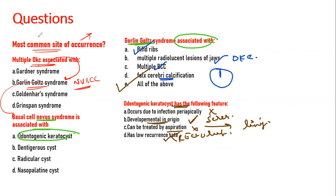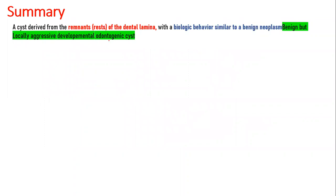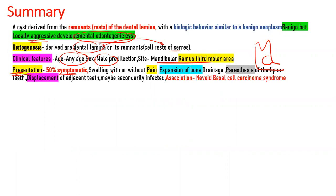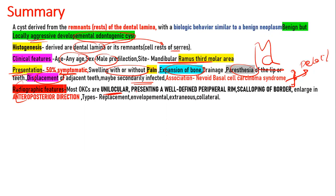In summary, the odontogenic keratocyst is a developmental odontogenic cyst which is locally aggressive. It is derived from the dental lamina or the remnants, which are the cell rests of Serres. Clinically seen at any age, with male predilection, most commonly in the mandibular ramus third molar area. Presentation: 50% symptomatic with swelling with or without pain, with or without expansion of bone, paresthesia, displacement of adjacent teeth, possible secondary infection, and association with the nevoid basal cell carcinoma syndrome. Radiographically, it is unilocular or multilocular with a well-defined smooth or scalloped peripheral rim. It enlarges in the anteroposterior direction, may not show obvious cortical expansion, and can grow to a large size without detection. The four subtypes are replacement, envelopmental, extraneous, and collateral.